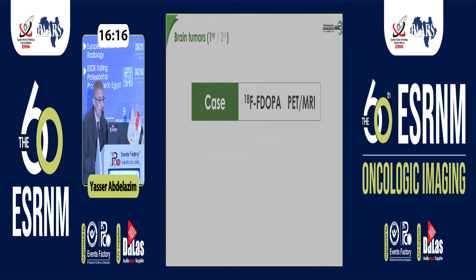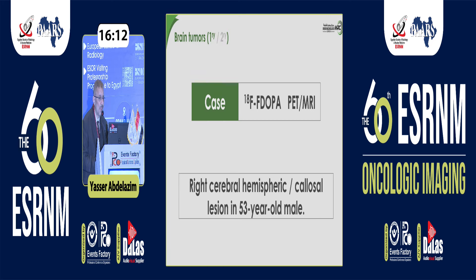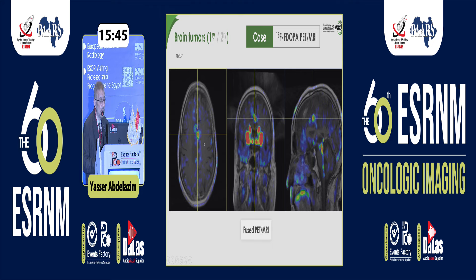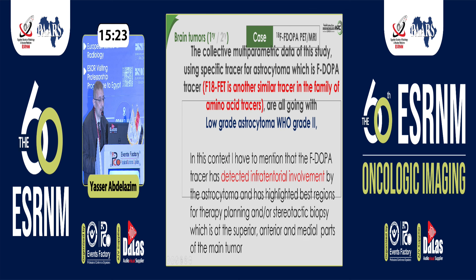Another case: low-grade astrocytoma, and fortunately this patient could afford F-DOPA, which is much more expensive than FDG. Here we have a low-grade astrocytoma by all scanning techniques — FLAIR, diffusion, T2 shine-through effect, very faint enhancement. When you use F-DOPA, look at how there is high uptake in the parts with low-grade tumor, because amino acid tracers are so sensitive to gliomas even if they are low-grade. We can also see multifocal spread inferiorly, and we highlighted the parts of more aggressiveness to guide biopsy.